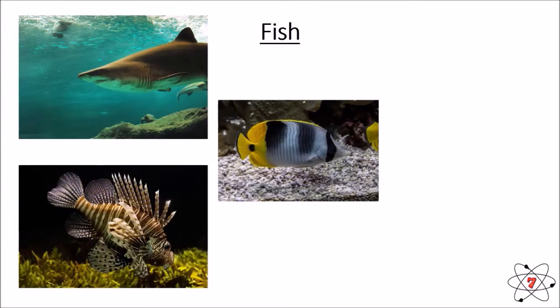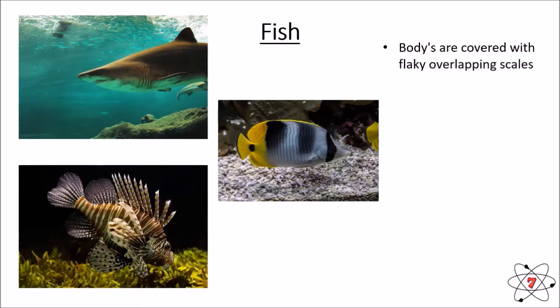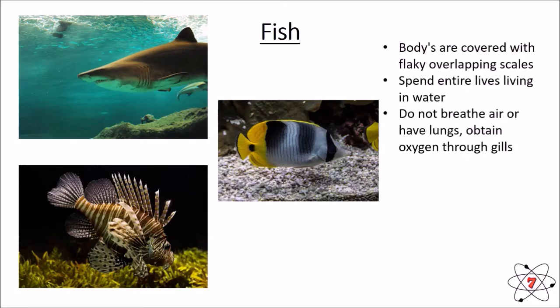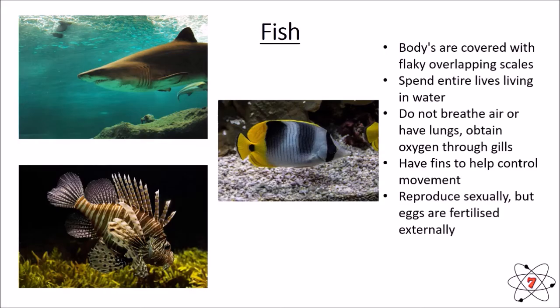The final class of vertebrates are fish. The bodies of fish are covered with flaky and overlapping scales — reptiles also have scales, but their scales are tough, whereas a fish's scales are flaky. Fish spend their entire lives in water and obtain their oxygen through gills rather than lungs. Fish have fins to help control their movement, and they reproduce sexually, but their eggs are fertilized externally: the female lays eggs in water and the male sprays sperm over them. So fish share some features with amphibians but are very different from the other groups.